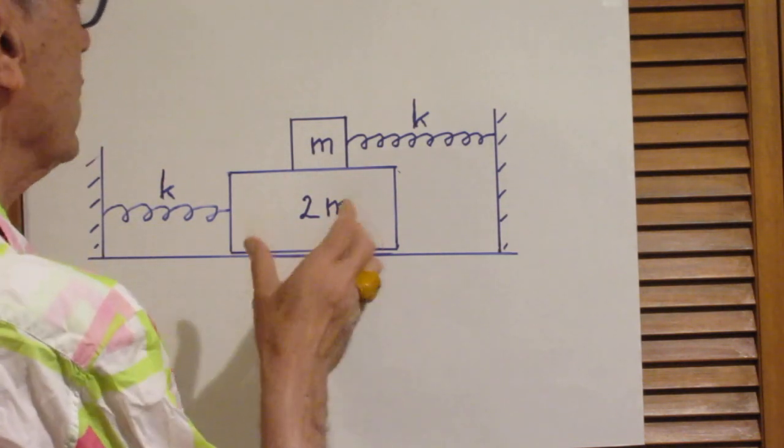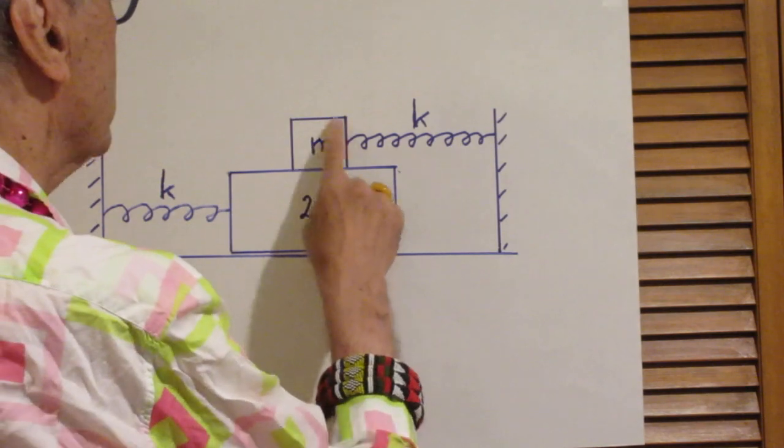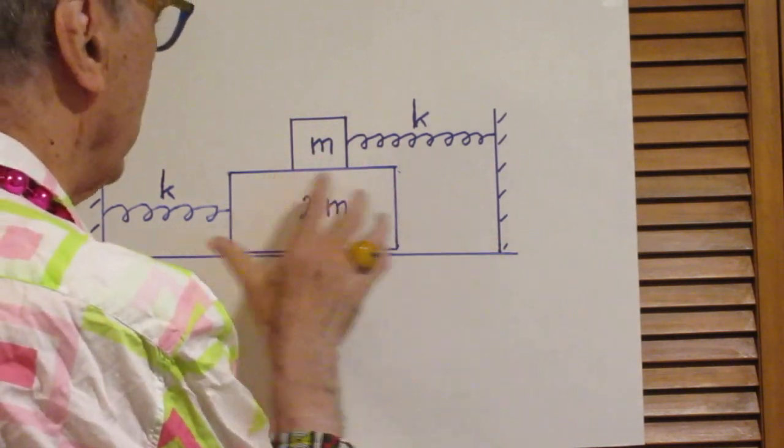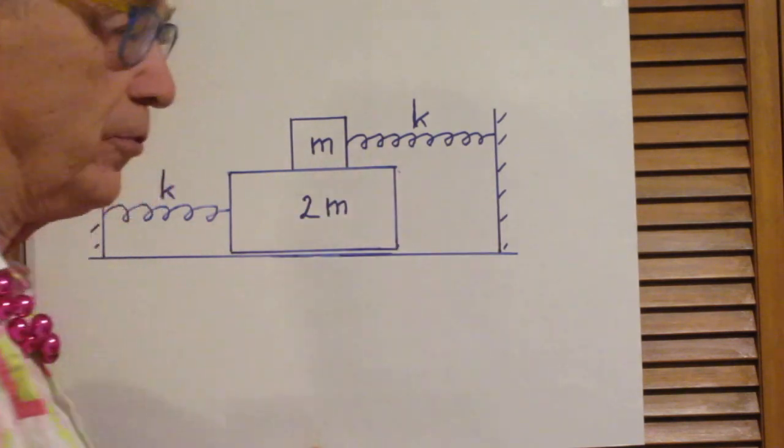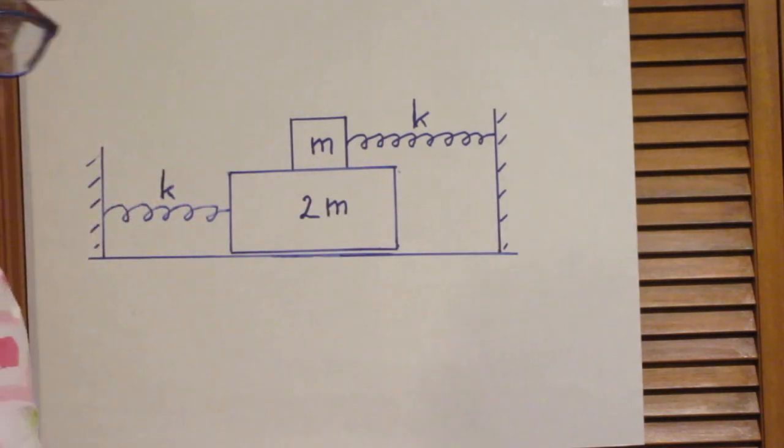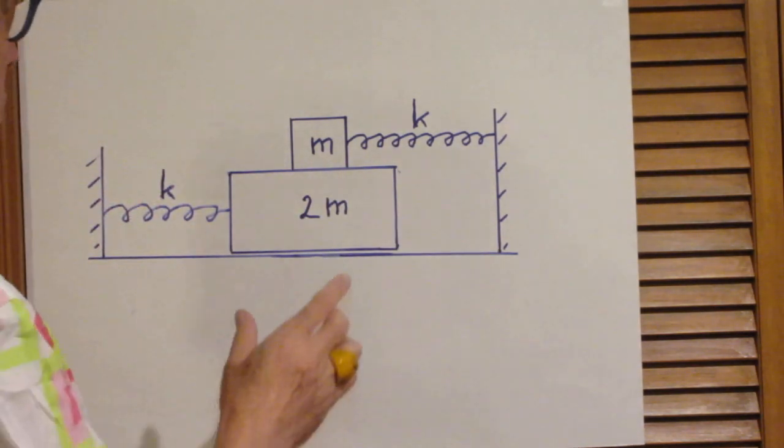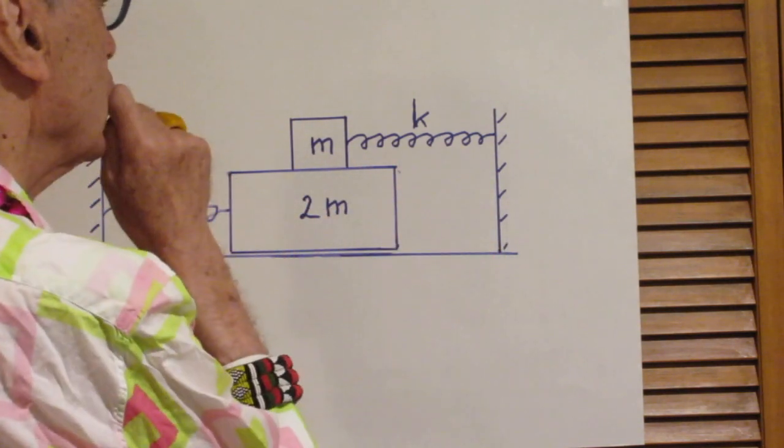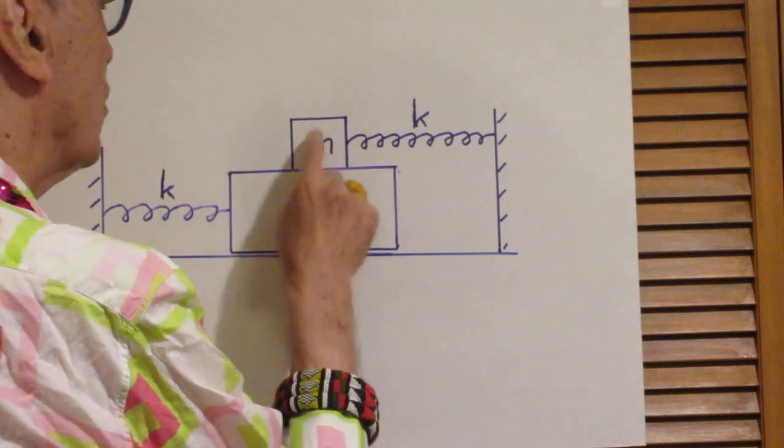Now, it should be obvious that as long as this block is not slipping on top, that the whole system can oscillate back and forth. But there comes a time that the oscillation is so large that this one starts to slip.